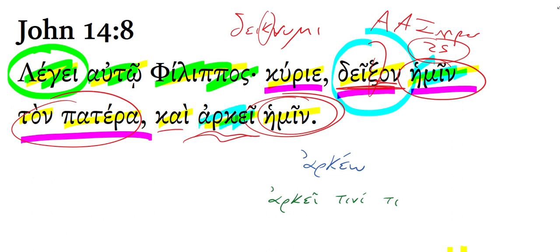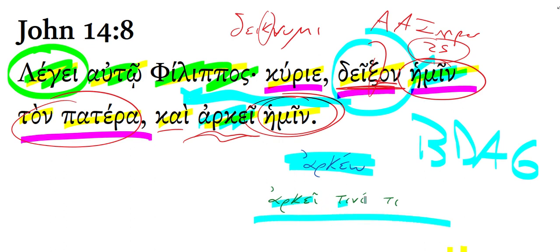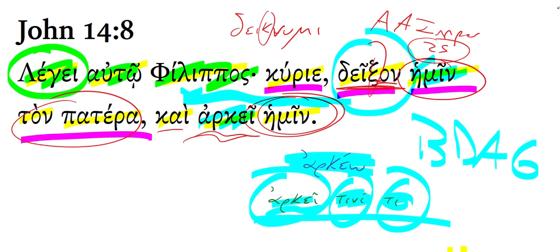This verb here, 'arke' — if you look it up in a lexicon like BDAG, the best Greek New Testament lexicon, you will look under the entry 'arkeo,' and you'll see this is a word that frequently has an impersonal subject, as it does here: 'it is sufficient for us,' 'it is enough for us.' And then if you look at the entry, it says 'arkei tini ti' — to be sufficient for someone something — so something to someone to be sufficient or to be enough. In other words, we're expecting a dative indicating to whom something is enough, and that's why we have that dative form right there. It is enough for us.